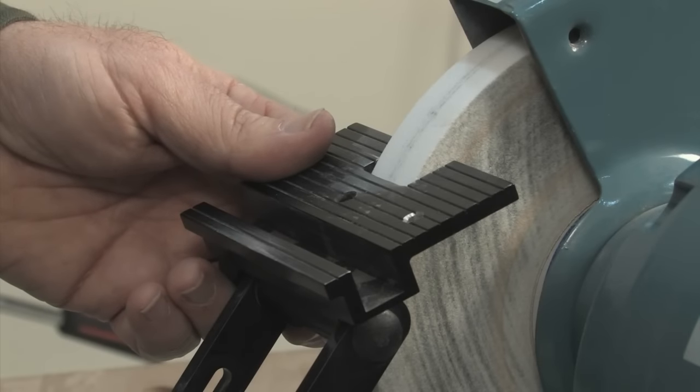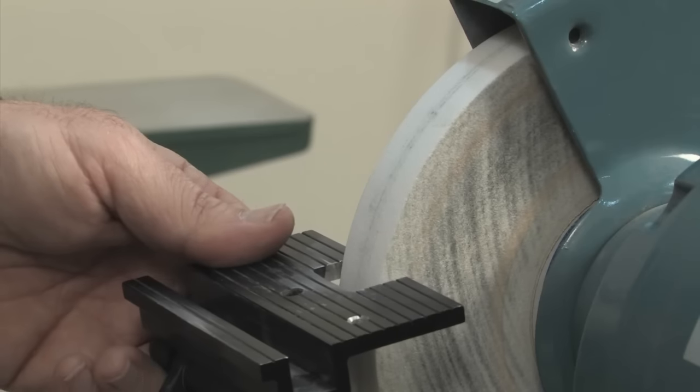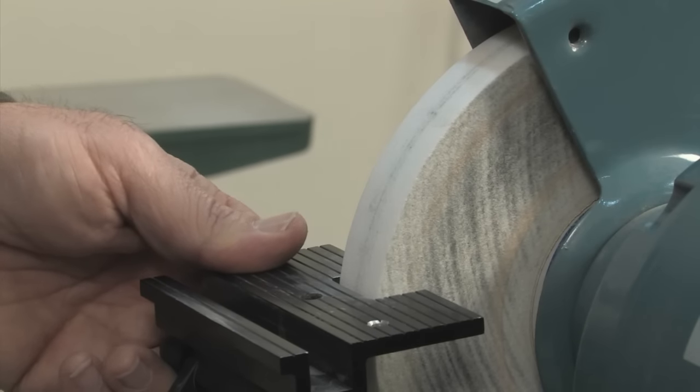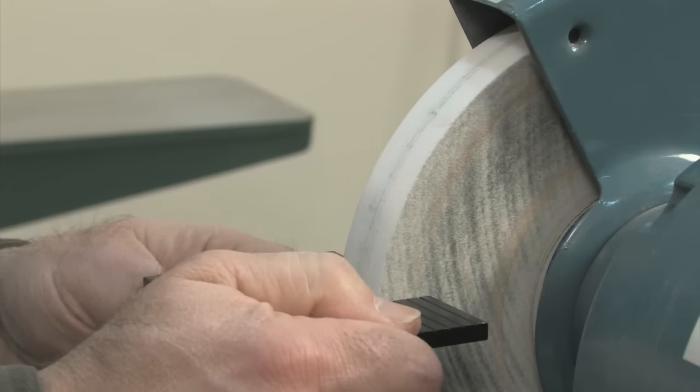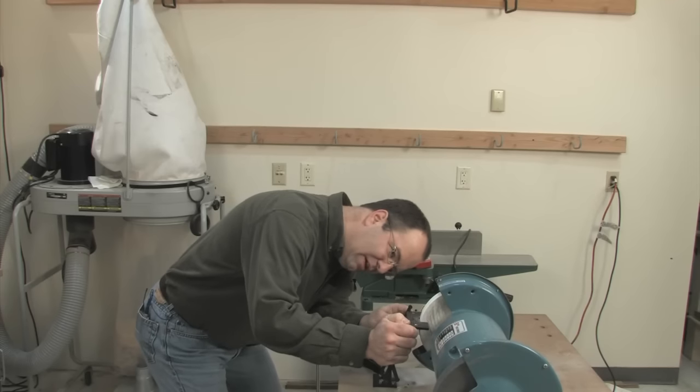The first thing we need to do is set this tool rest back to about 90 degrees to the wheel, like you had it when you were dressing the wheel, but don't really sweat this. It just needs to be close to 90. That looks great. Now we're just going to blunt this tip, working our way right up to the reference line.